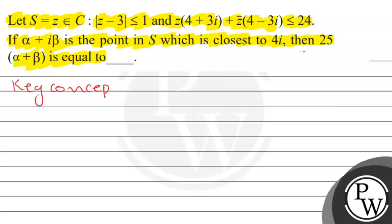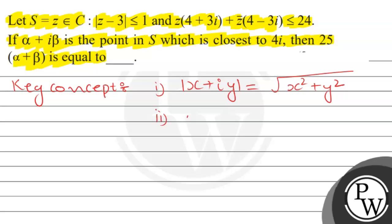First, let me tell you the key concepts that will help solve this question. The first key concept is that the modulus of x plus i·y is equal to the square root of x squared plus y squared. The second key concept is that i squared is equal to minus 1.